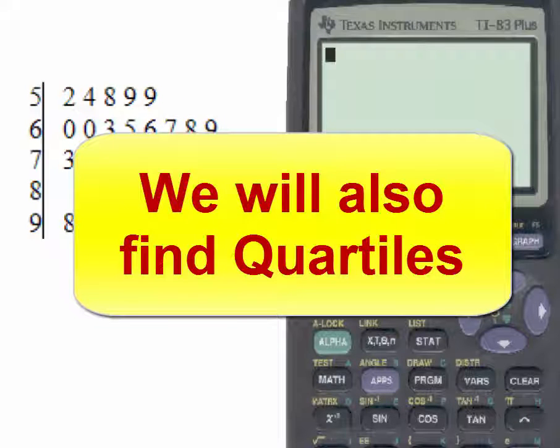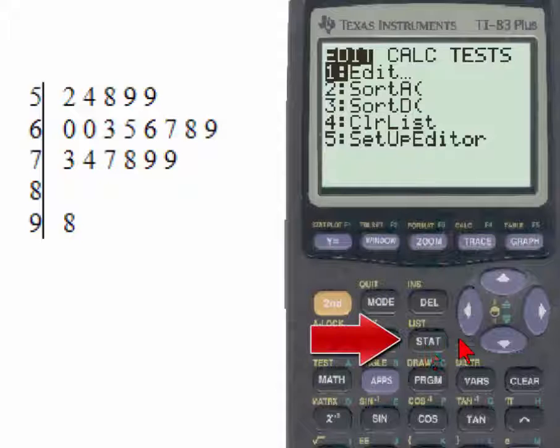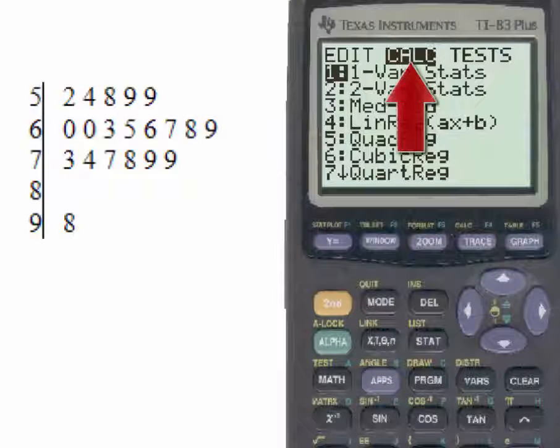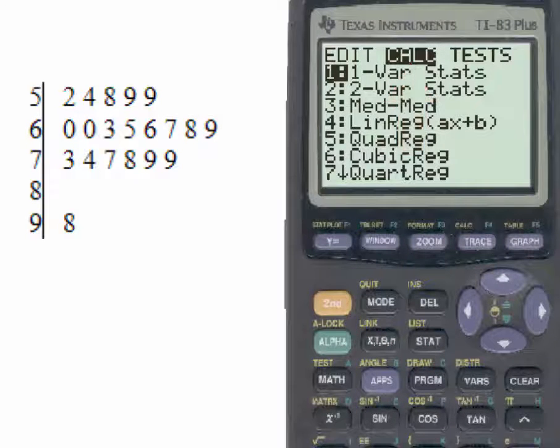We'll look at the values for the mean, the median, and the standard deviation by going to the stat key, then to the calculate menu, and selecting number one by either hitting number one or the enter key.